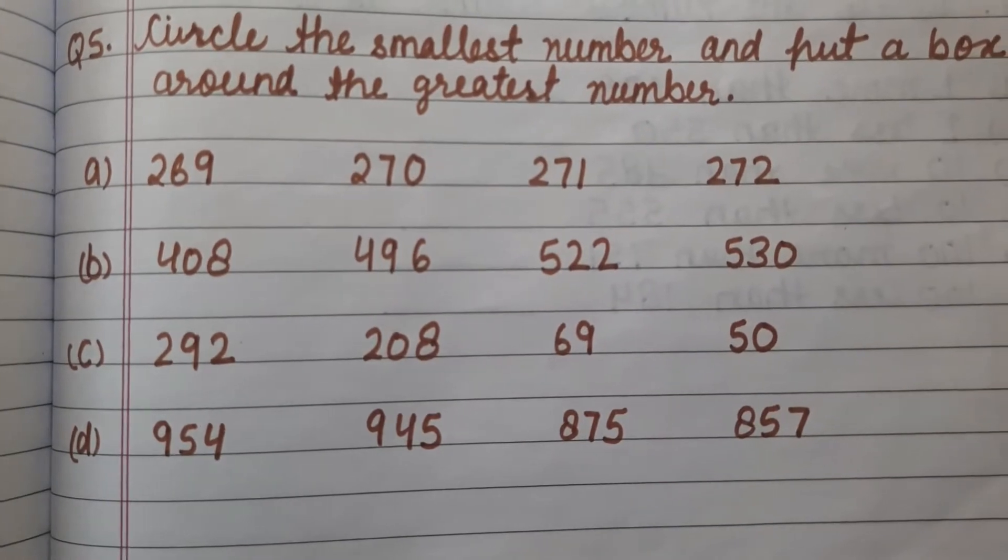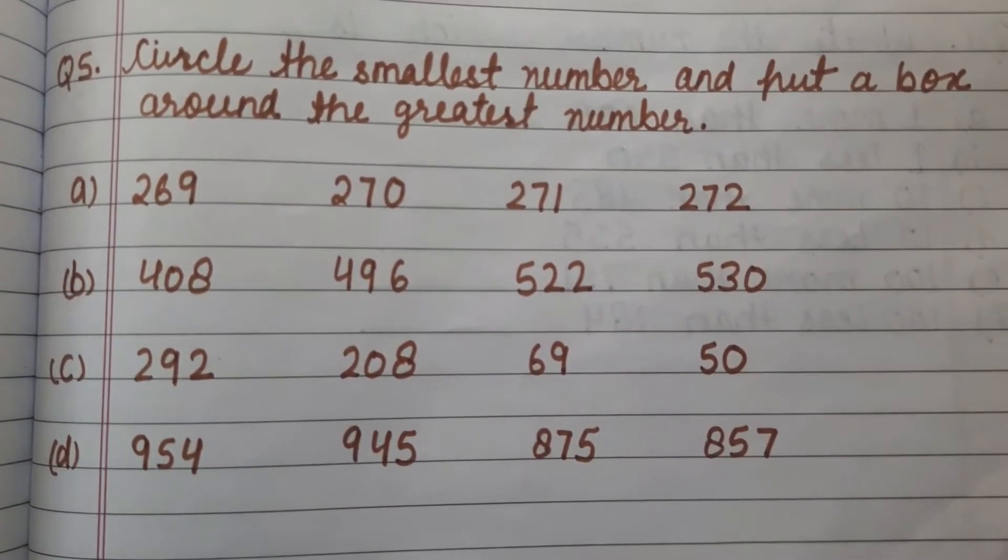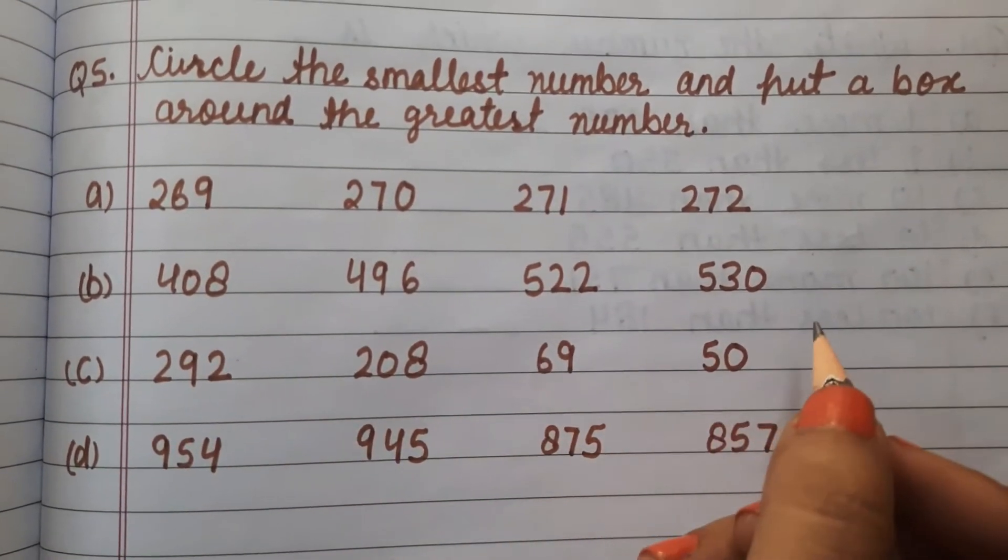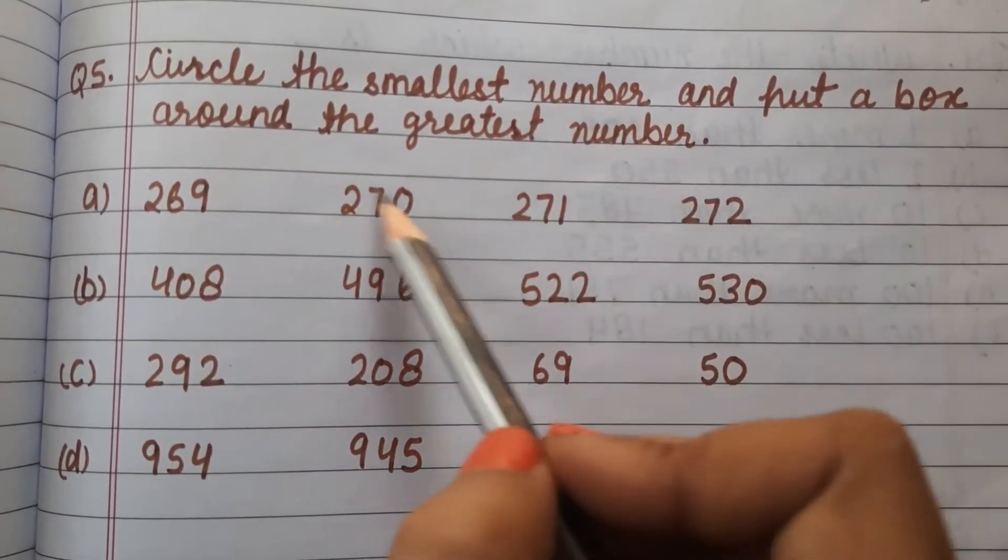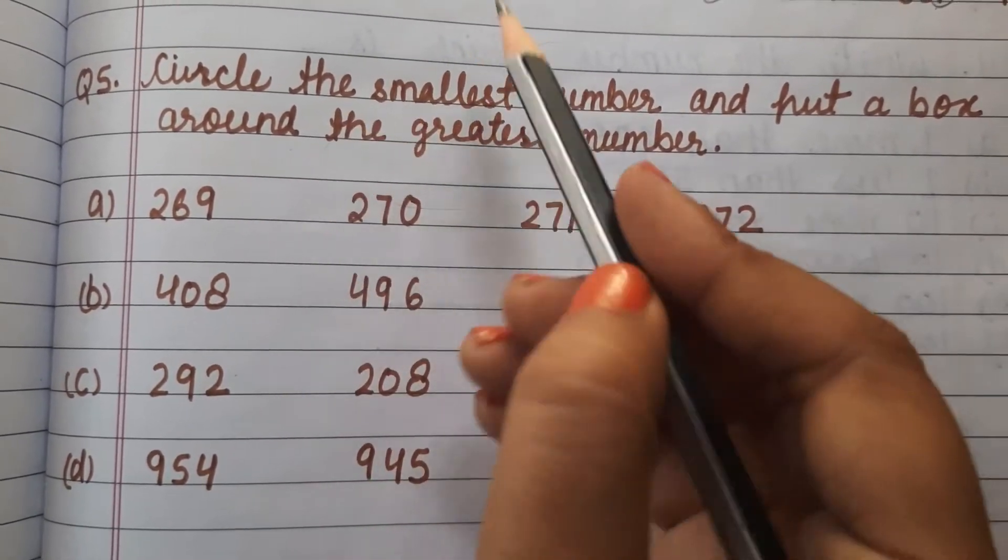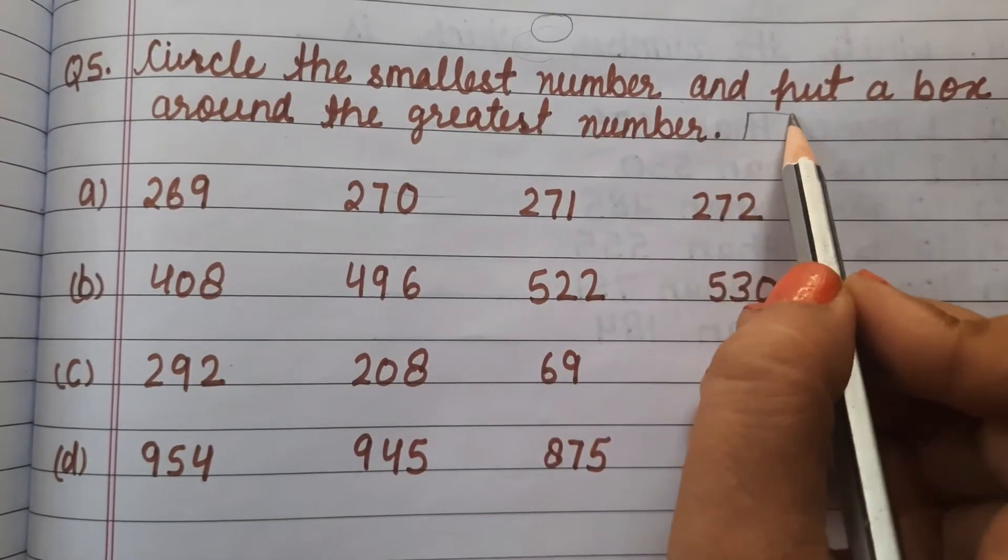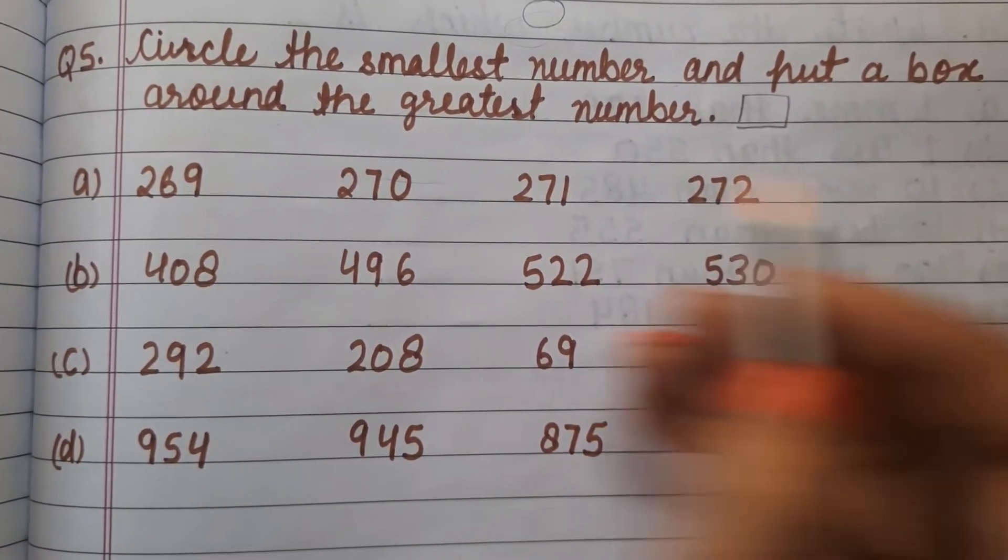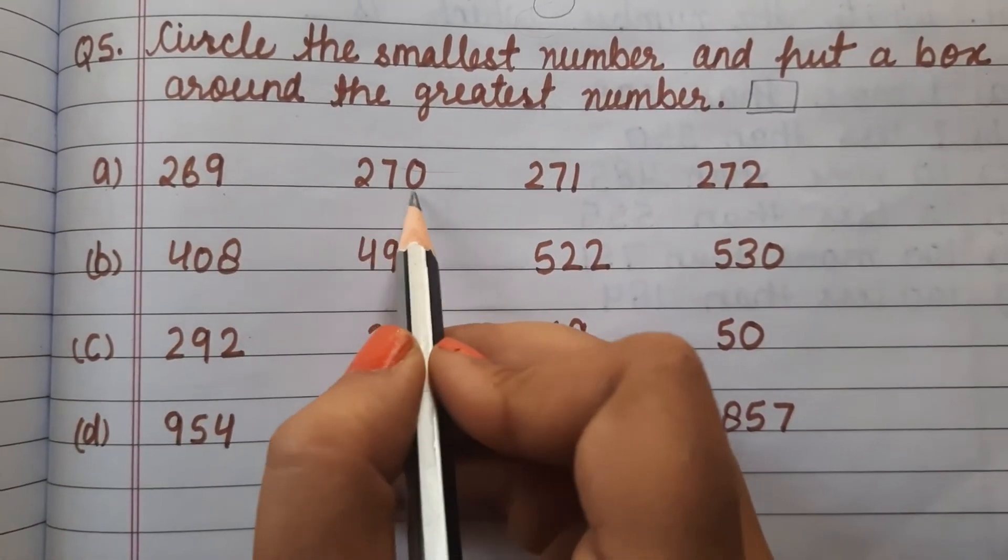Hi everyone, this is the result from G Creative Generation. We are doing maths for class third, question number five. Circle the smallest number and put a box around the greatest number. Smallest means the least, greatest means the most, the largest number.